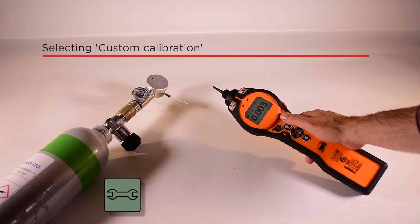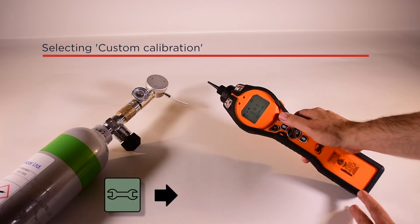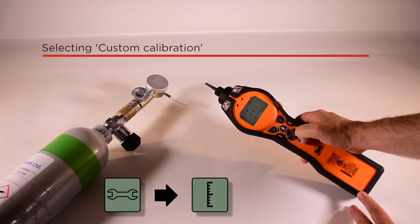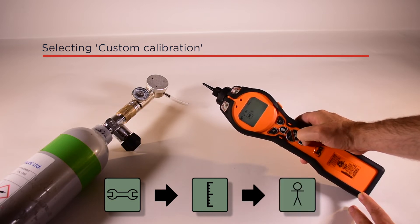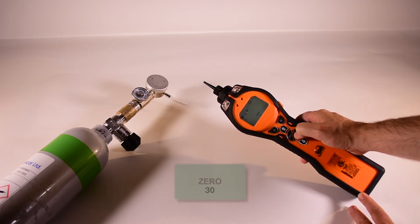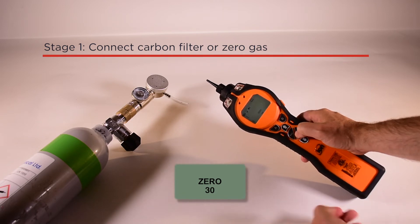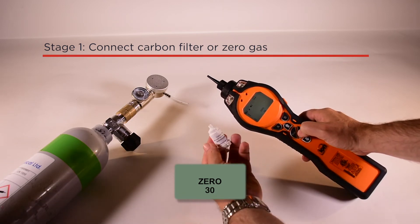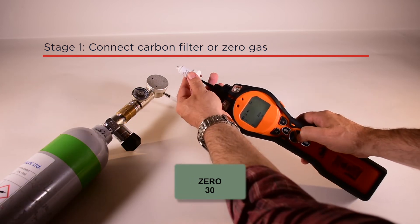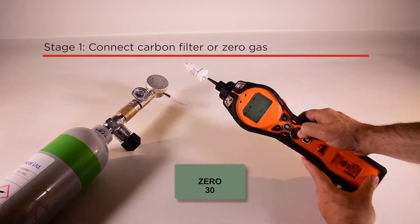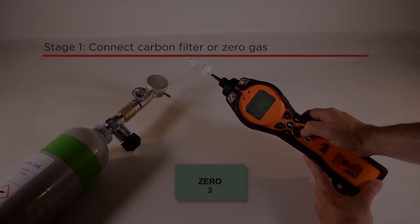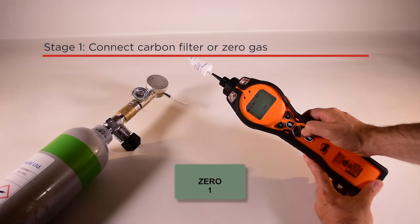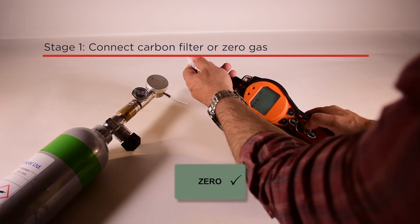Select options, calibration, and then custom calibration. When zero appears, connect your carbon filter and press enter. A 30-second timer will count down and then a check mark appears to indicate the zero stage is complete. Press enter. Now disconnect the carbon filter.